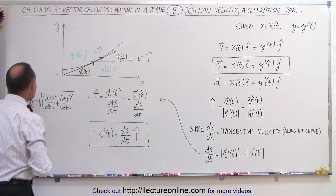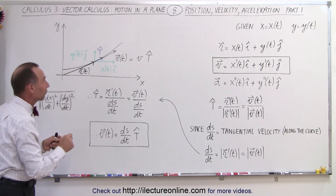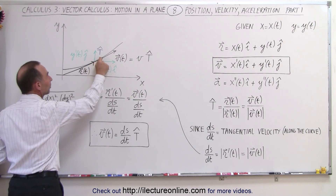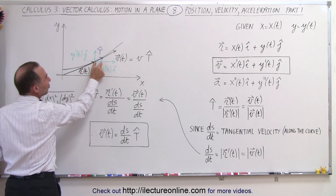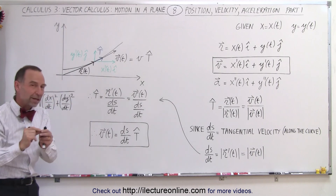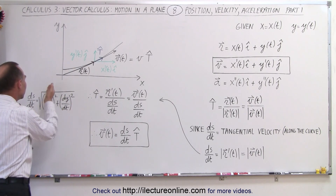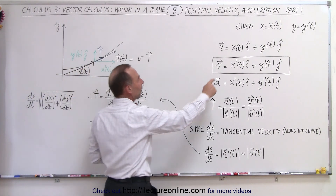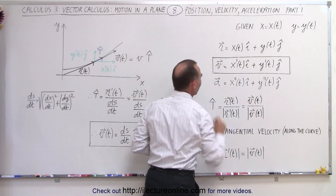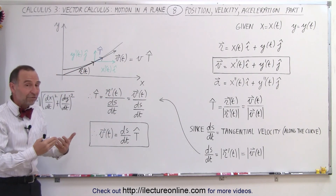Also remember that ds/dt can be expressed as the square root of the sum of the squares of dx/dt and dy/dt. If you go from one point on the curve to another, there is a small change in x with respect to time and a small change in y with respect to time, forming a miniature triangle. We use the Pythagorean theorem to relate ds/dt to dx/dt and dy/dt, where x and y are defined in our position vectors.